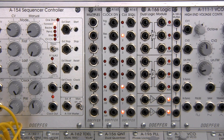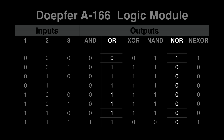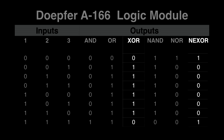Let's see those values on the truth table. As you can see, the AND and NAND columns are related because in every instance where AND is high, NAND is low. So accordingly, if AND is low, then NAND is high. The same applies for the OR and NOR columns, and finally the XOR and NEXOR columns.